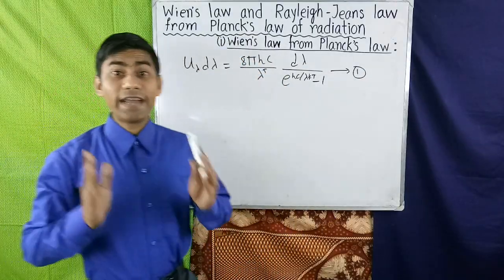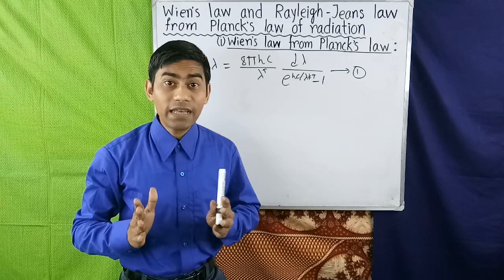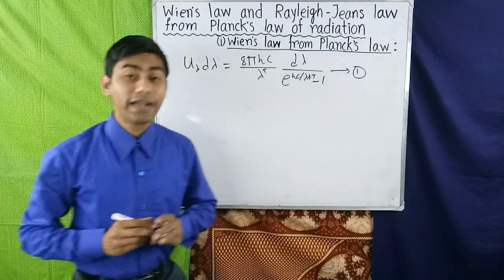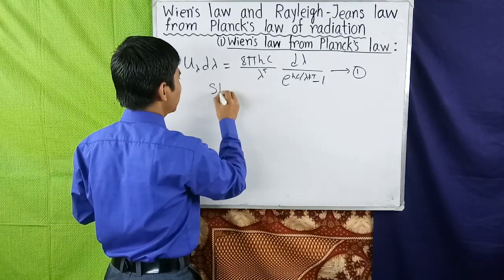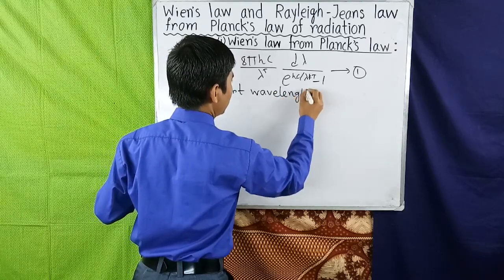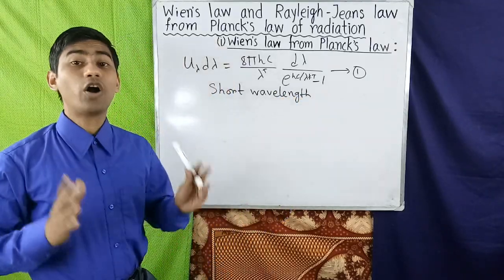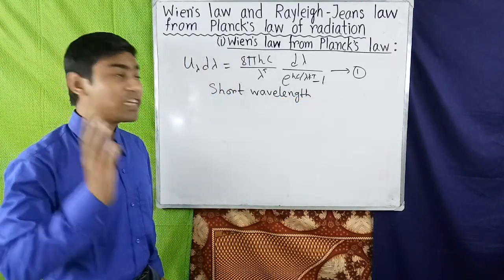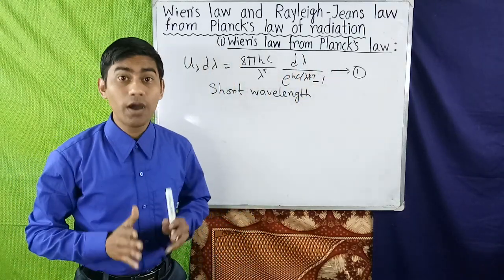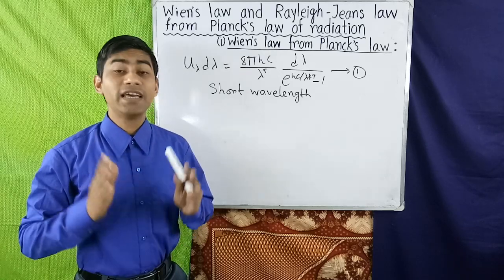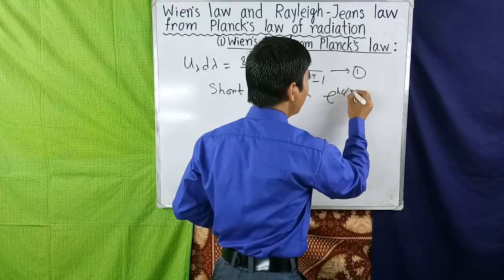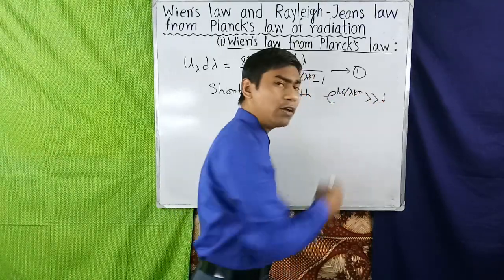For short wavelength or high frequency, the exponential term in the denominator of equation 1 has a value much greater than 1. That is, for small value of λ, e^(hc/λkT) is much greater than 1.